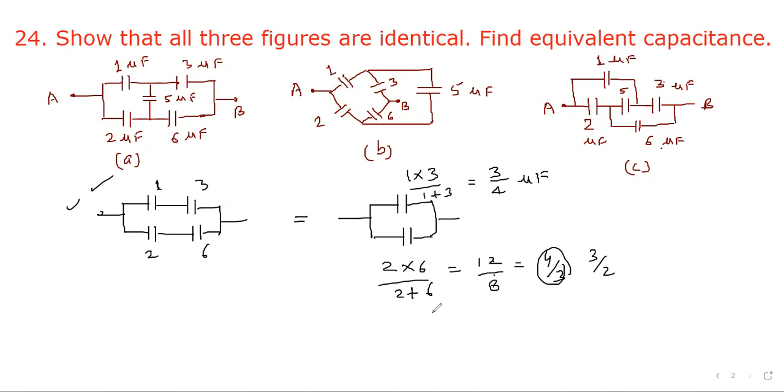Now these two capacitors are in parallel. We know that if capacitors are in parallel, then their combined capacitance will be sum of the individual capacitances. So C_parallel will be equal to 3/4 plus 3/2.